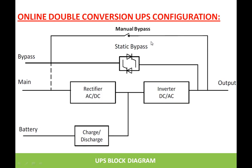What does the UPS operating mode define? It defines how power is available at the UPS output. It can come through mains, rectifier, inverter, and the output; or it can come through the battery bank, discharge circuit, inverter, and the output; or it can come through the static bypass or manual bypass.